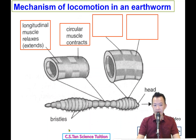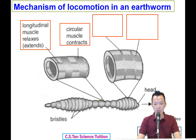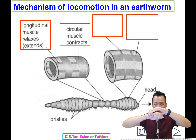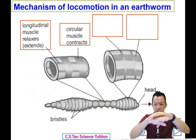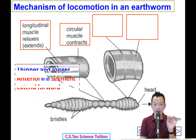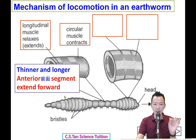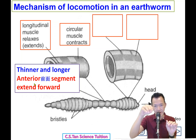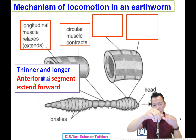When the circular muscle contracts and the longitudinal muscle relaxes, the earthworm's body becomes thinner and extends longer. The anterior segments then extend forward.